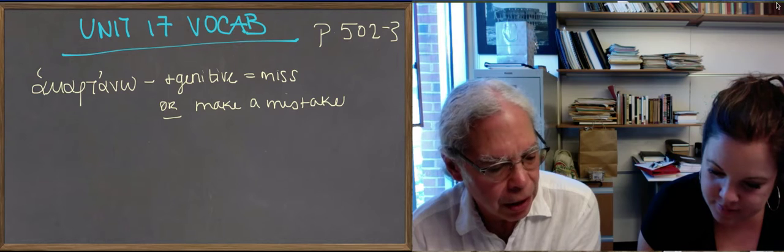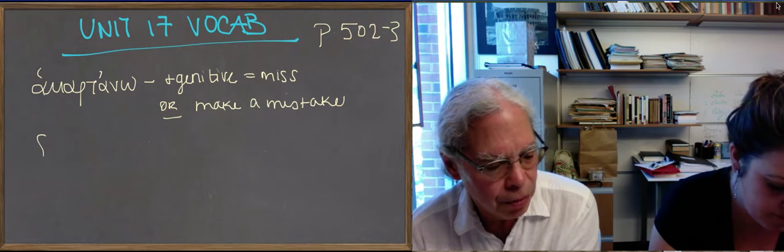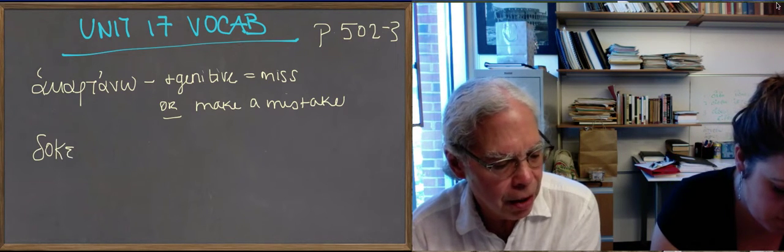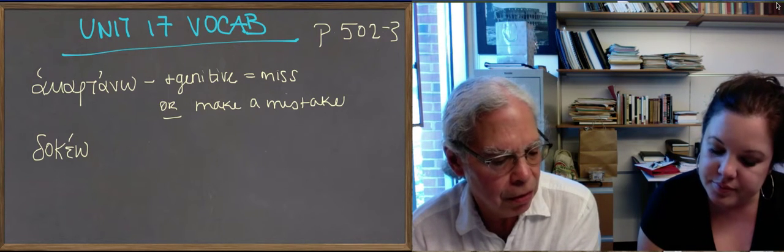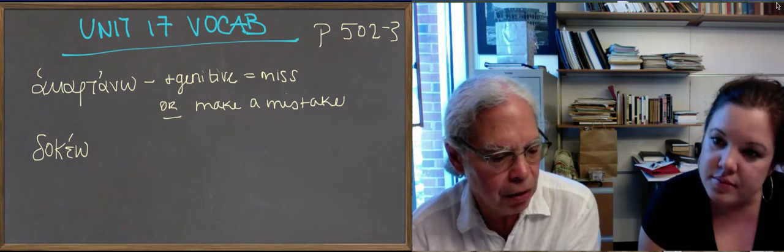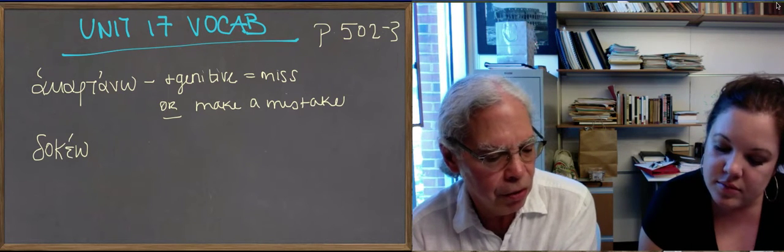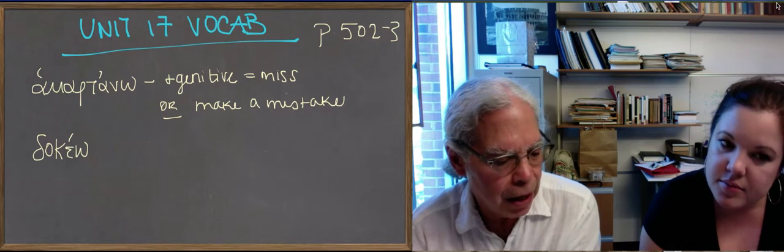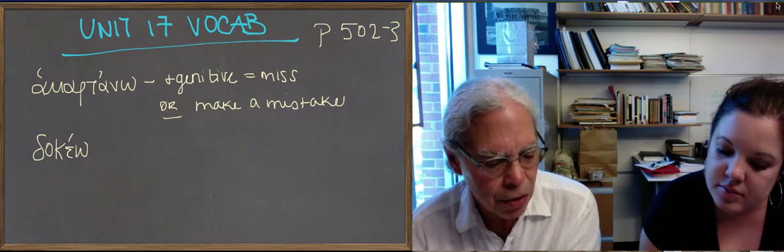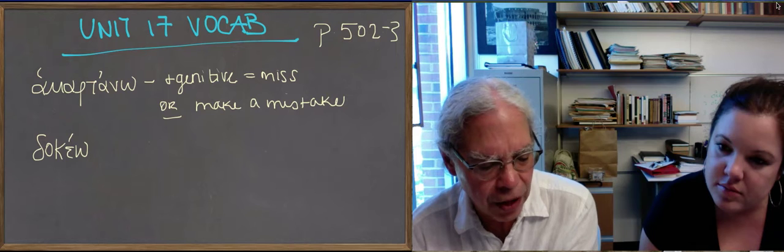And we get the verb doceo. Doceo, those principal parts are doxo, edoxa, okay? Not doceso. Notice, it's not, principal parts are not like an epsilon contract verb. So something else is going on, doxo, edoxa, and dedogma, and dedogthein. There's no perfect active of this verb. And it means two things, seem and think.